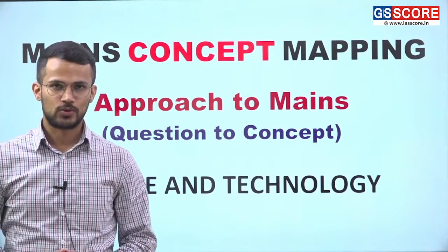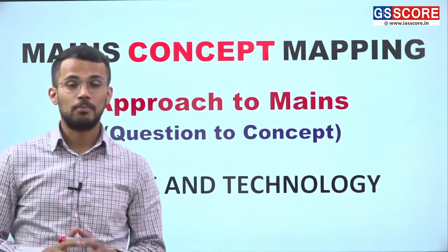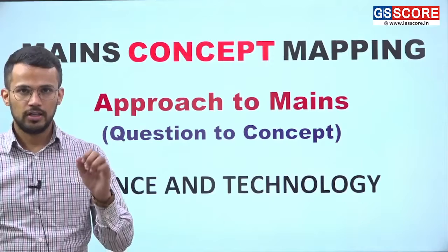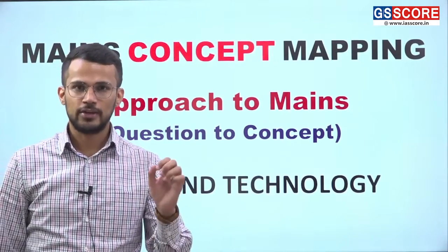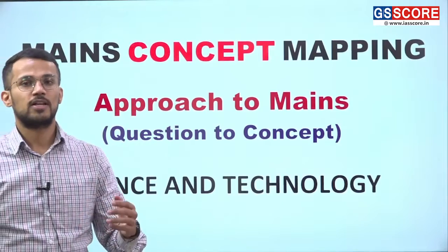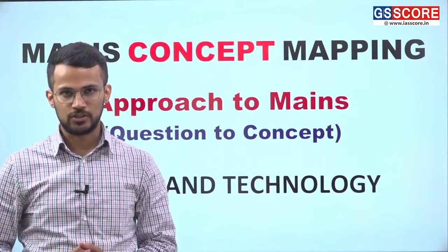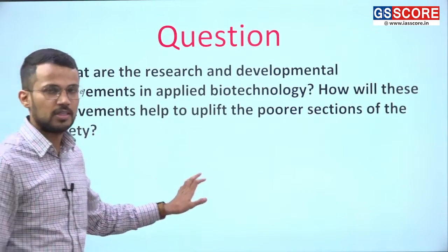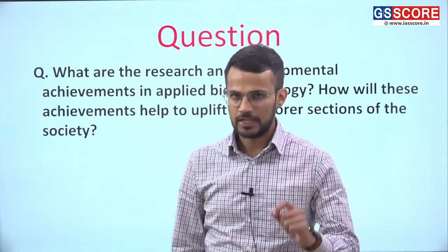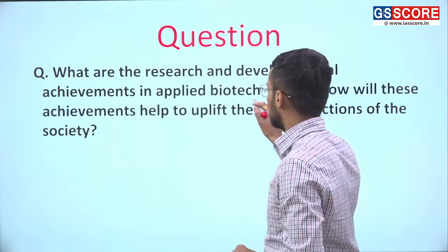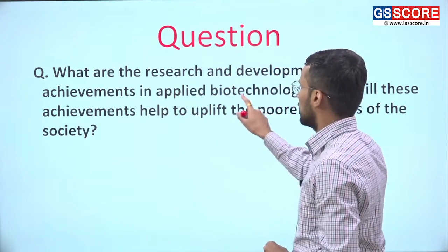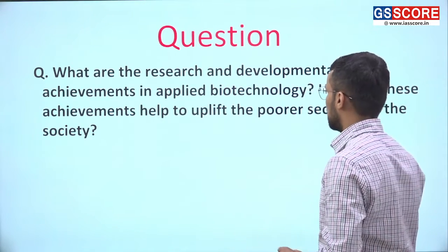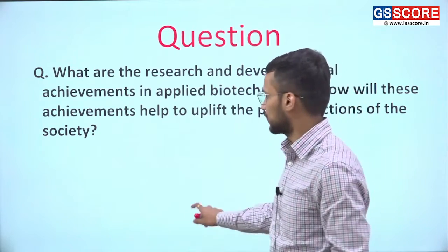Hello everyone, welcome to GA School. Today in this session we are going to discuss about mains concept mapping, and the topic of discussion is science and technology. In mains concept mapping we discuss a question on the basis of which we try to understand which concepts are important in the mains examination. Today we are going to discuss about a question asked by UPSC in mains 2021: what are the research and developmental achievements in applied biotechnology and how will these achievements help to uplift the poorer sections of the society?